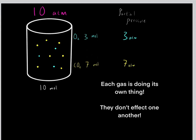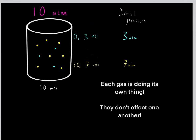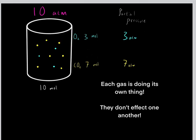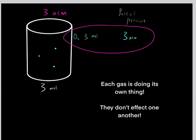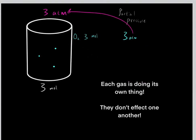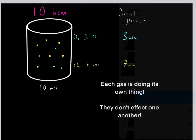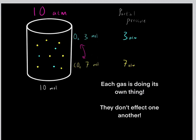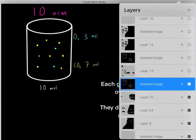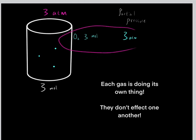Each gas is doing its own thing, irrelevant of the other gases. For example, oxygen is contributing 3 atmospheres to the total pressure. Even if we were to make the carbon dioxide disappear, this 3 moles of gas would still contribute 3 atmospheres. These gases aren't influencing each other — whether the 7 moles of carbon dioxide is around or not, it doesn't influence what the oxygen gas is doing.